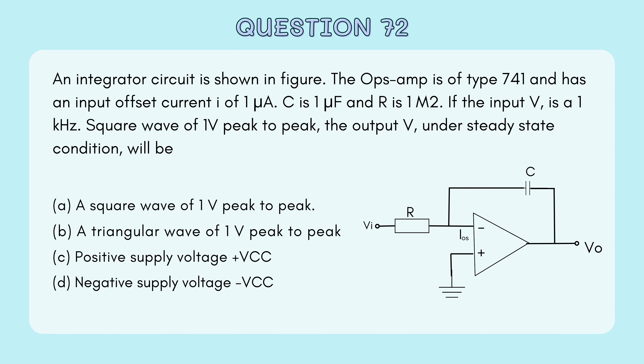Let's look at this question. An integrator circuit is shown in the figure. The op-amp is type 741 and has an input offset current IOS of 1 microampere. C is 1 microfarad and the resistor is 1 megaohm. If the input voltage VI is a 1 kilohertz square wave of 1 volt peak to peak, the output voltage VO under steady state condition will be?